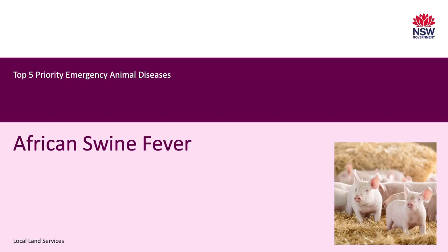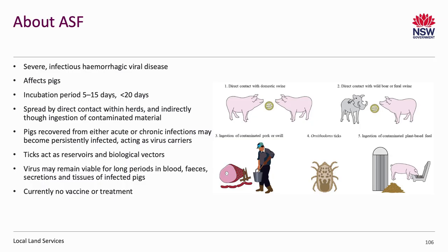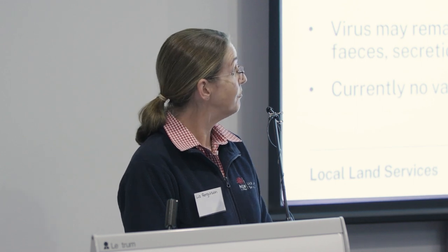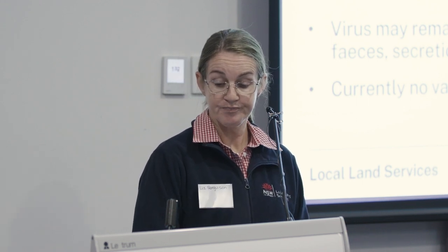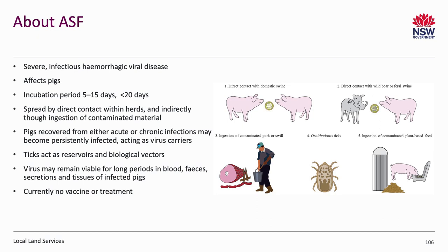African swine fever is a severe infectious haemorrhagic viral disease affecting pigs, with an incubation period of usually less than 20 days. It spreads by direct contact within herds and indirectly through ingestion of contaminated material. There was an ASF outbreak in Timor-Leste not too long ago, discovered to be caused by contaminated products from China being fed to local pigs. Pigs recovered from either acute or chronic infections may become persistently infected, acting as virus carriers. Ticks can act as reservoirs and biological vectors, and the virus can remain viable for very long periods. There is currently no vaccine or treatment.